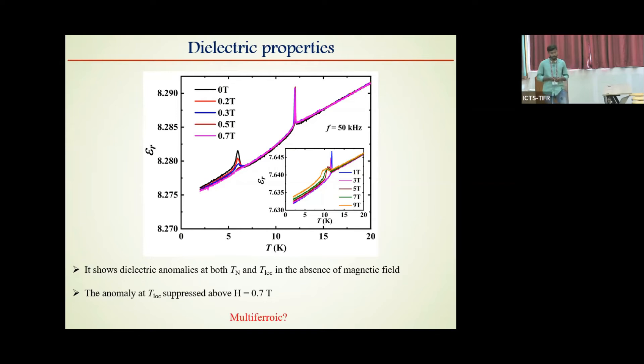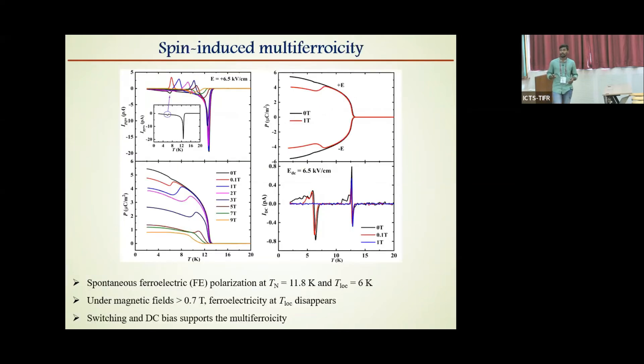But polarization in these multiferroic materials is very less compared to conventional ferroelectrics. By using PE loop measurement, we cannot measure polarization in the case of multiferroics. So we have opted for pyrocurrent measurement, which I have shown here and the corresponding polarization is shown here. When we look at the pyrocurrent data, there are two clear pyrocurrent peaks at both the magnetic transitions, confirming that this compound is type 2 multiferroic.